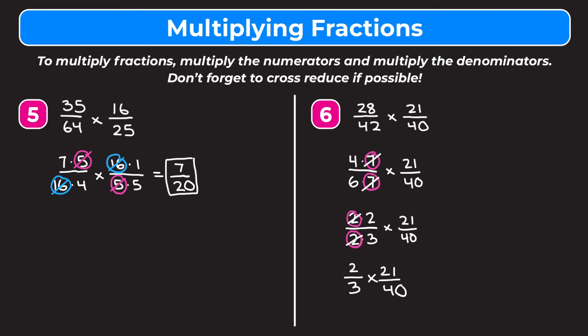Now we check if we can cross-reduce 2 thirds times 21 over 40. Looking at the diagonals: 2 and 40 share a factor of 2, so rewrite 40 as 2 times 20. And 3 and 21 share a factor of 3, so rewrite 21 as 3 times 7. Crossing out the 2s top and bottom and the 3s top and bottom — replacing each crossed-out value with 1 — we're left with 1 times 7 on top, which is 7, and 1 times 20 on the bottom, which is 20. Our answer is 7 twentieths.